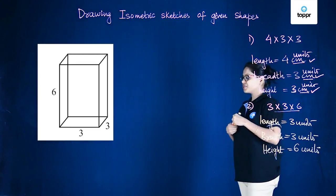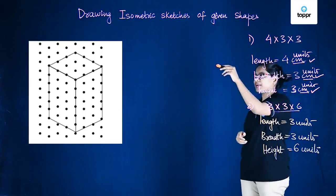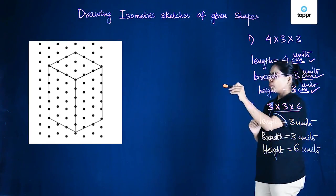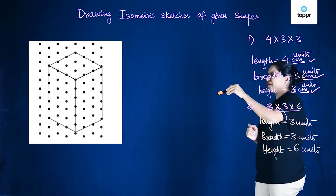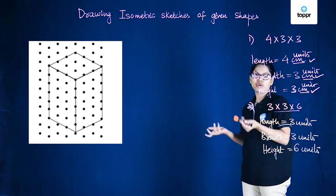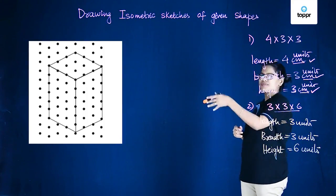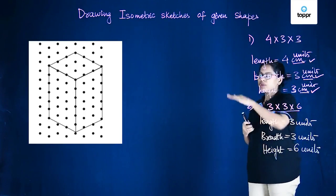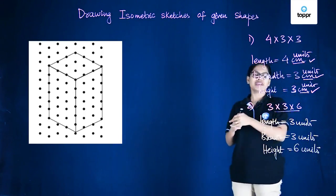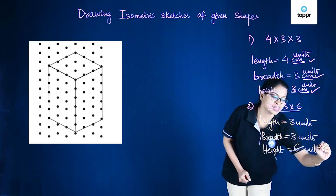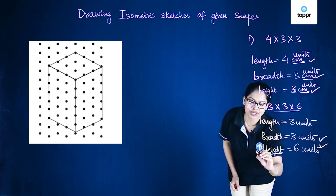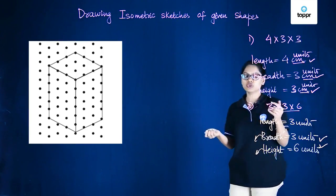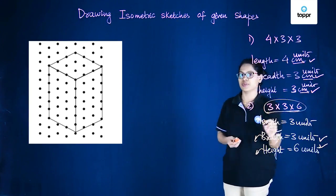Now in order to construct this, first we start the construction by drawing this on the isometric paper. We draw this rectangle with length 3 and the other face with length 6 and breadth 3. This here we took as the length and this as the breadth. That's immaterial because in the end we need a cuboid of 3 by 3 by 6 dimensions.